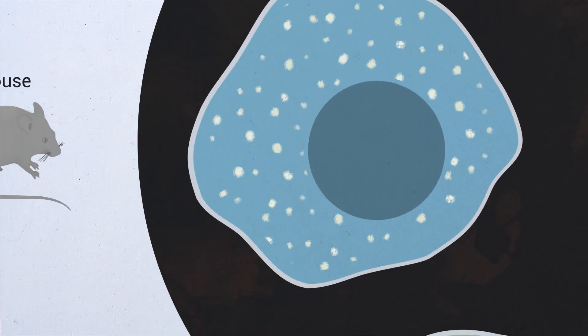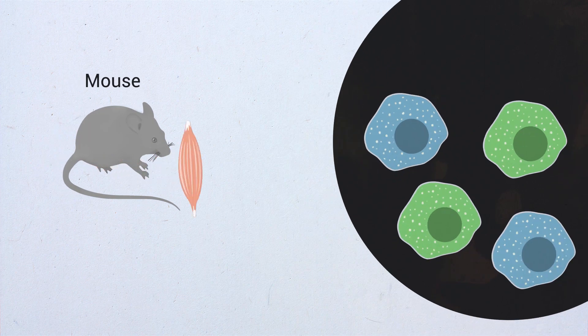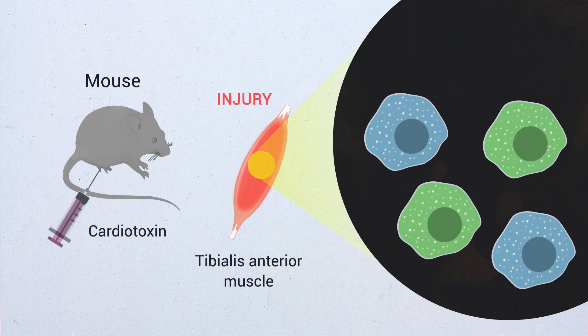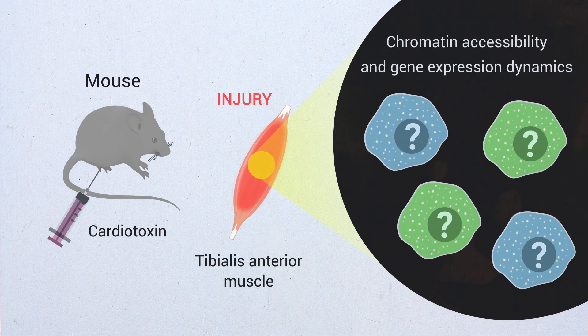In this study, we used a murine acute muscle injury model to assess global chromatin accessibility and gene expression dynamics in infiltrating macrophages during sterile physiological inflammation and tissue regeneration.